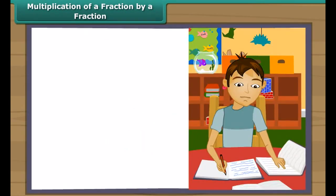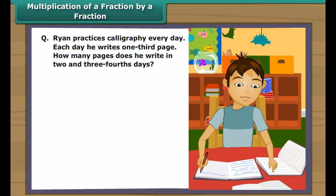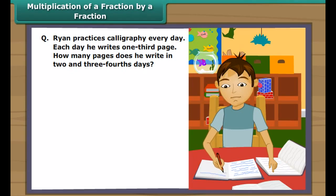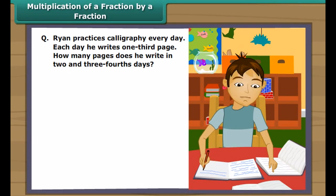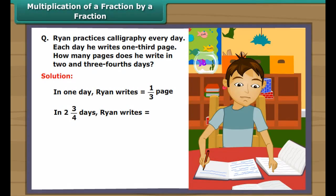Example: Ryan practices calligraphy every day. Each day he writes one-third of a page. How many pages does he write in two and three-fourths days? The part written in one day is one-third, so the part written in two and three-fourths days is one-third multiplied by two and three-fourths, which equals one-third multiplied by eleven-fourths, giving eleven-twelfths. Thus Ryan writes eleven-twelfths of a page in two and three-fourths days.